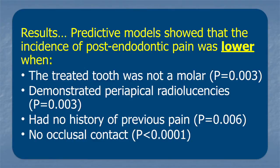The predictive model showed that the incidence of post-endodontic pain was lower when the treated tooth was not a molar. I think we can assume that the size of the tooth and the number of roots and root canals were a factor in the reasoning of why molars caused more of a problem than did a single-rooted tooth.